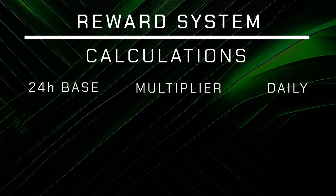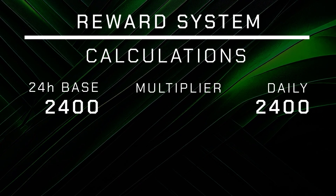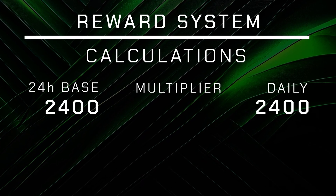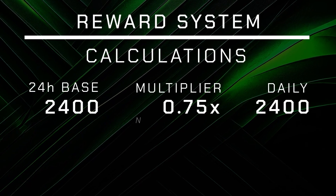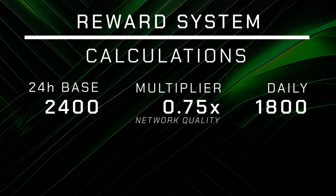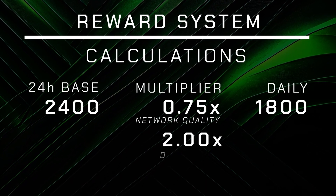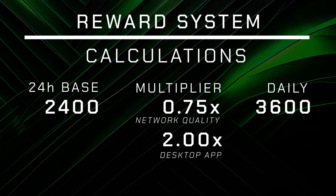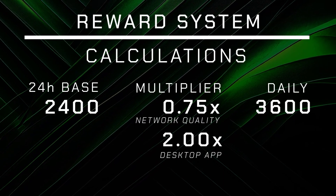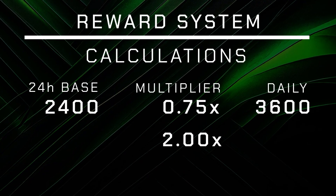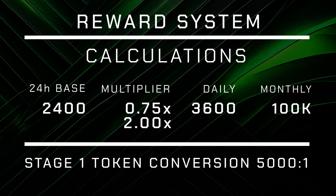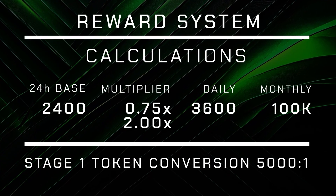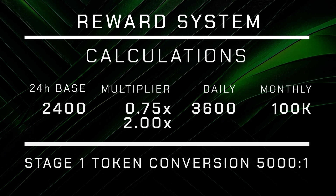When running a node, there are several things that can affect the points earned. The daily earning for running a node uninterrupted is 2400 points. Depending on the quality of the network and location, a percentage multiplier is added. In my location, that multiplier is 0.75, meaning I earn 75% of the full 2400 points, which makes it 1800 points. There is also a bonus multiplier for running the desktop node, which doubles the points, bringing it to 3600 points per day for a full day of activity. This means the average maximum I can make per month is roughly 100,000 points. The calculations for token conversion are revealed at the end of each stage, so there is no sure method for a proper estimation, but if they keep the 5000-to-1 conversion ratio, I think I will be quite happy.